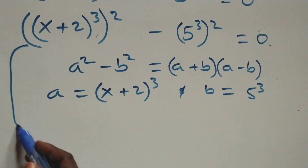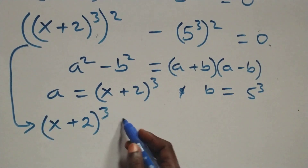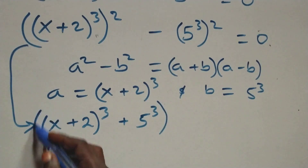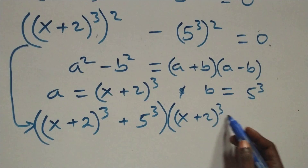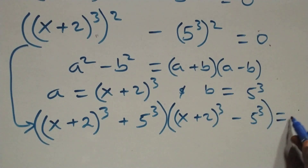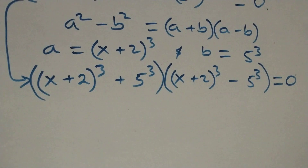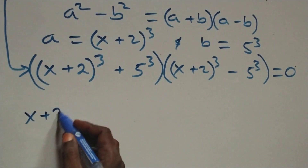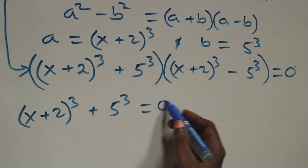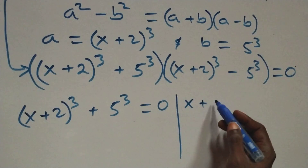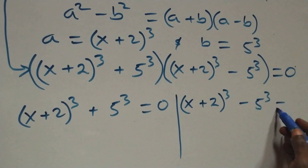Then the next step, this becomes [(x + 2) raised to power 3 plus 5 raised to power 3] times [(x + 2) raised to power 3 minus 5 raised to power 3] equals to 0. Solving, we have two possible cases: Case 1: (x + 2)³ + 5³ = 0, or Case 2: (x + 2)³ − 5³ = 0.